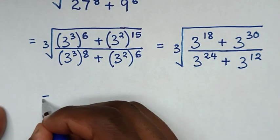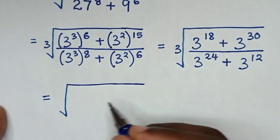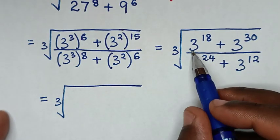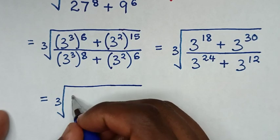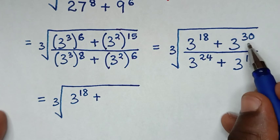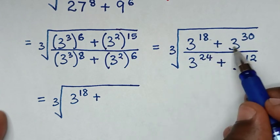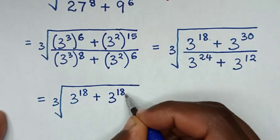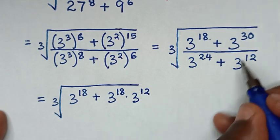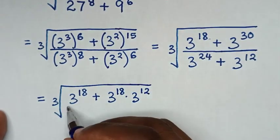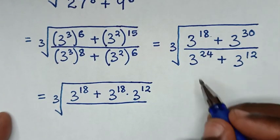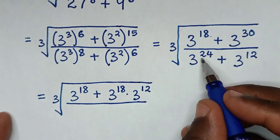Then it will be equal to cube root of: in the numerator 3 power of 18 is the smallest, so it will be 3 power of 18 plus from 3 power of 30 we make 3 power of 18 common, so 3 power of 30 is same as 3 power of 18 times 3 power of 12.